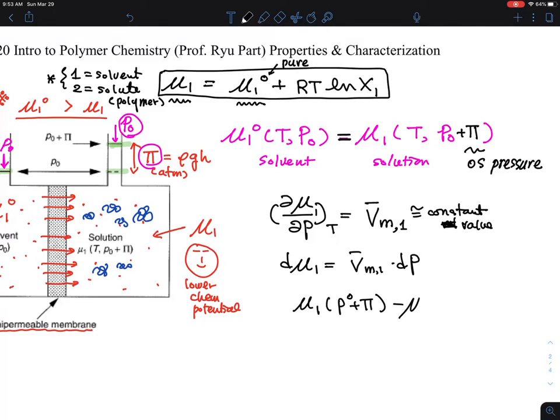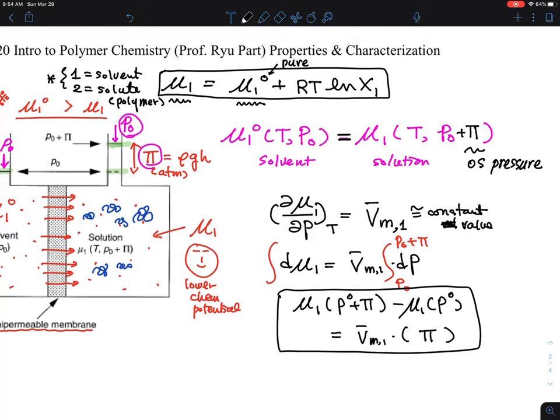So changing the μ in the state of p⁰ plus π minus μ₁ in p⁰, and that's coming from doing this integration over there, from p⁰ to p⁰ plus extra pressure head, which is p⁰ plus π. So that means this equation on the left is nothing but just π, because it's just a subtraction p⁰ plus π minus p⁰. So we came a long way to come about this equation now.